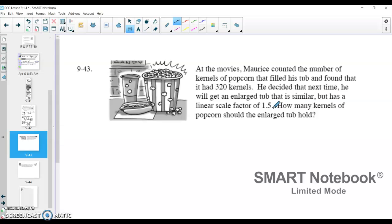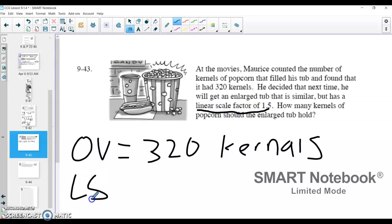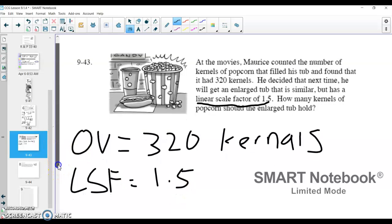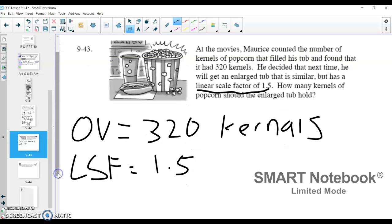And so really kind of what's happening here is our original volume, our original volume was, it's going to be, it's a weird measurement, but it was 320 kernels. That was our original volume. We now have a linear scale factor. We want to use a linear scale factor of 1.5 to say we want a bigger tub next time, a tub that holds more kernels. So if we use a linear scale factor of 1.5, how many kernels of popcorn should the enlarged tub hold?